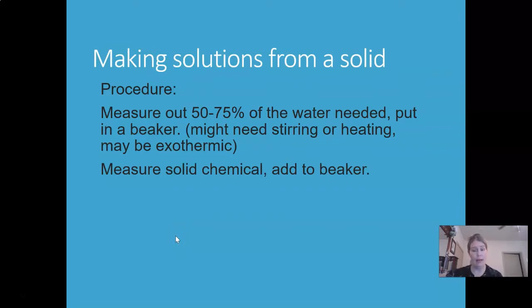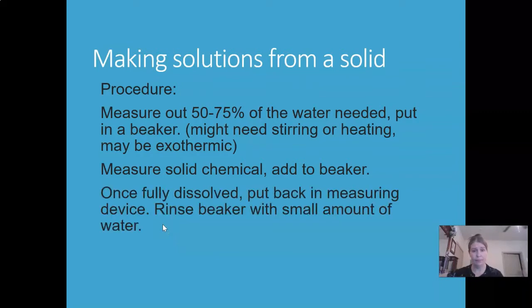Then I'll measure out the solid chemical and add that to the beaker. Remember some solids are hygroscopic and absorb water from the air, so you want to have things ready before you measure the solid so it's not sitting around waiting. Once that is fully dissolved, you're going to put that back into the measuring device and rinse the beaker or any funnels, stir bars, stir rods with a little bit of water so you get all of the solute back into the measuring device. Then you'll fill the measuring device to the desired amount.